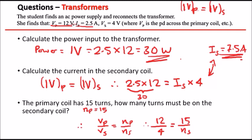So once again, doing some nice neat algebra. Let's make some space here. 12 over 4 is 3. So we have 3 equals 15 over NS. Now all we want to do is just literally times both sides by NS and divide by 3. So you should get NS equals 15 over 3. And this is 5 turns.